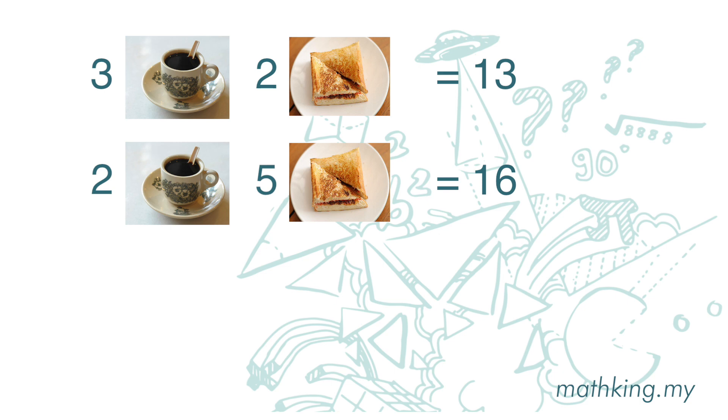If we use x to represent coffee and y to represent roti baka, then we can write down these two equations. 3x plus 2y is equal to 13. 2x plus 5y is equal to 16.